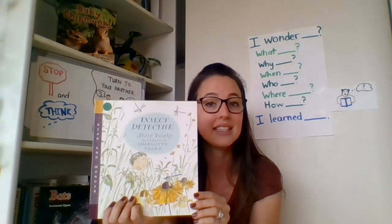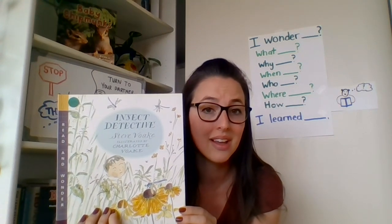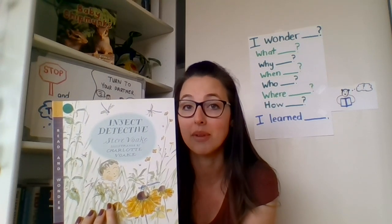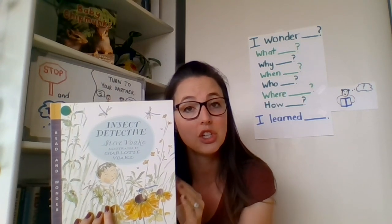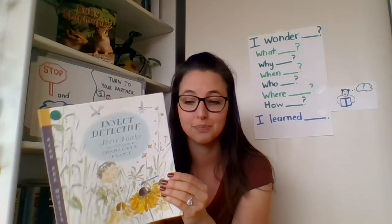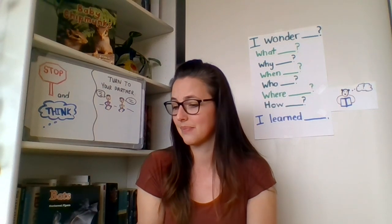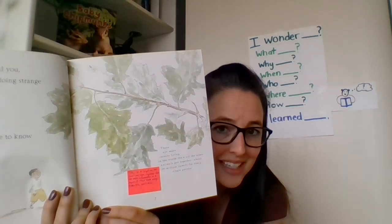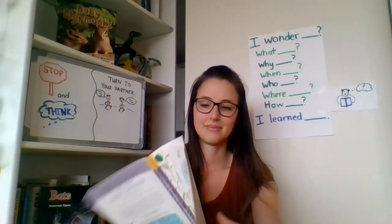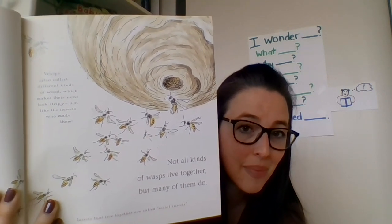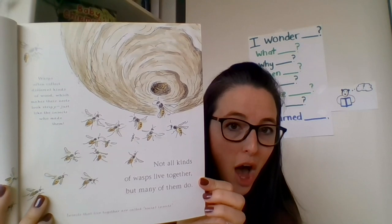In our last lesson, we were reading Insect Detective by Steve Voek, illustrated by Charlotte Voek, and published by Candlewood Press. We read the first part of this text and we practiced asking questions and seeing what we learned. Today we're going to do something similar while we finish the rest of the text and look for answers to the questions we asked previously. As a refresher, this text talked about how there are over 200 million insects in the world. We learned about wasps being social insects — they work together to build their nests, which are made of wood pulp.